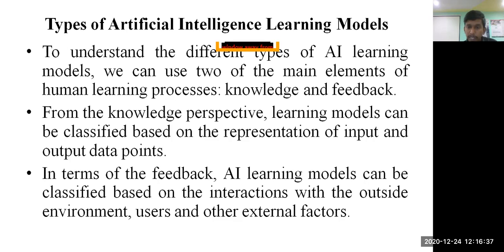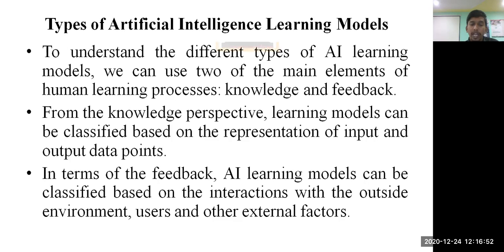From the knowledge perspective, learning models can be classified based on the representation of input and output data points. In supervised learning you have some input and the output is already given, while in unsupervised learning you don't have the output parameters — the machine needs to understand the output parameters and run accordingly. Based on input and output data points, knowledge classification can be done.